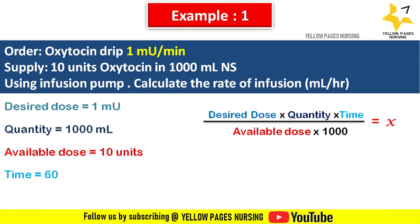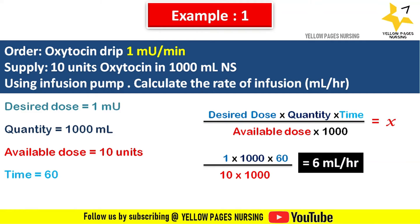Time will be 60 minutes, since we need ml per hour for the infusion pump. To convert 1 milli-unit per minute to milli-unit per hour, we multiply 1 by 60. Applying all values in the formula: 1 × 60 × 1000 ÷ (10 × 1000) = 6. Hence we set 6 ml per hour.